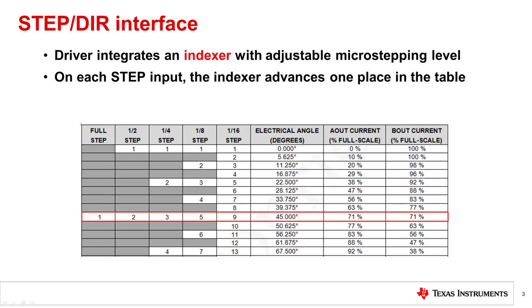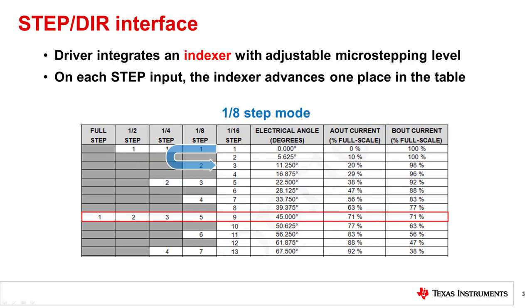Here is a typical indexer table from a stepper driver datasheet. When the indexer table is at index 1, the driver regulates the current in the A phase winding to 0% of the full scale setting and the B phase winding to 100%. When the step pin receives a rising edge, the indexer moves to the next state in the table. If the driver is configured to 1/4 microstepping, the second state will regulate 38% of the full scale current in the A phase winding and 92% in the B phase winding. In the case of 1/8 microstepping, a rising edge on the step pin will regulate the A phase and B phase currents to 20% and 98% respectively.